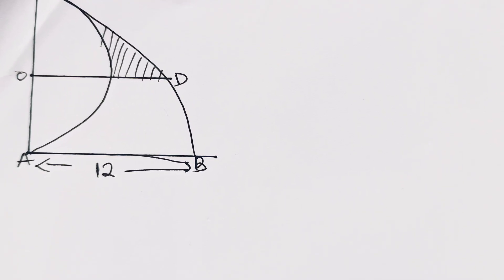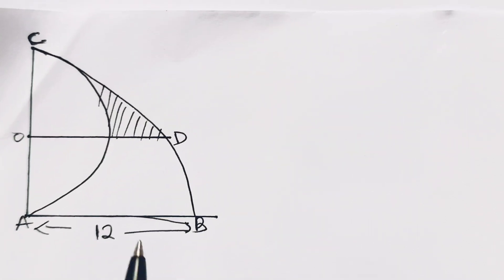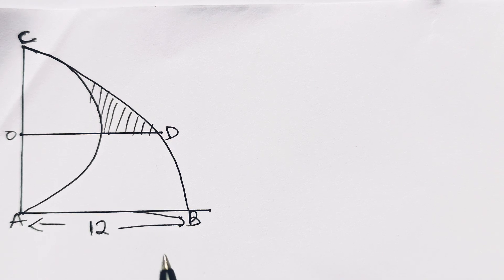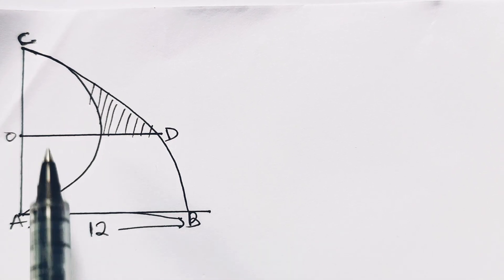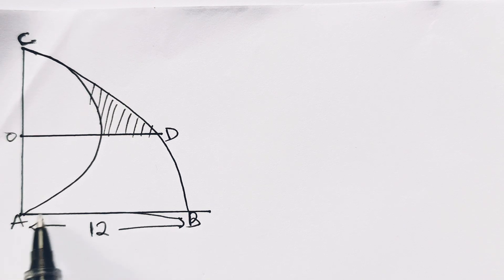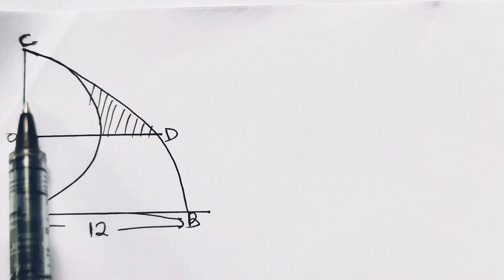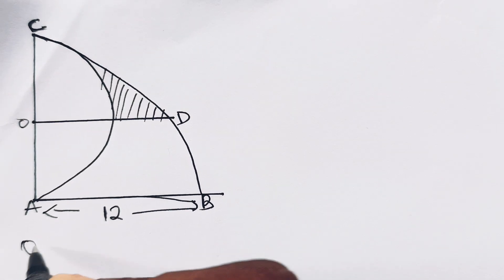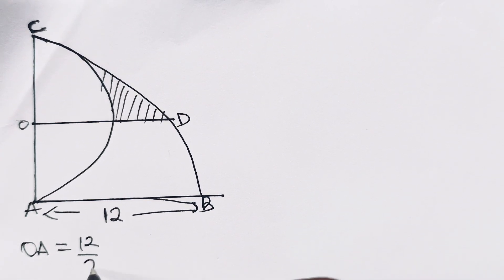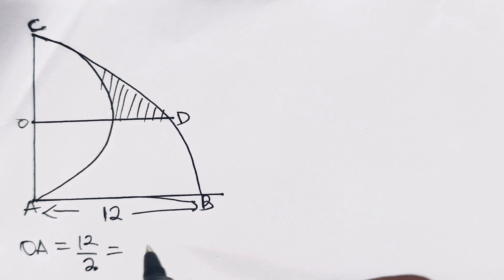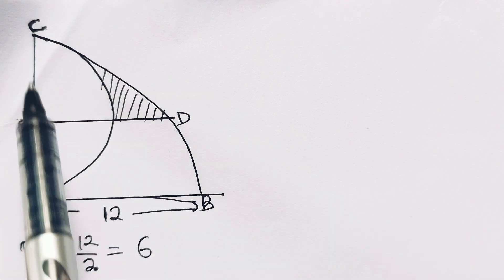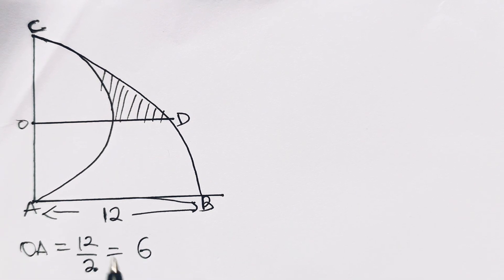Hi everyone, let's solve for the value of the area of the shaded portion. This is not drawn to scale, and this is a quadrant of a circle. The radius is 12. AC is a diameter, so OA is equal to the radius divided by two, which is equal to 6.